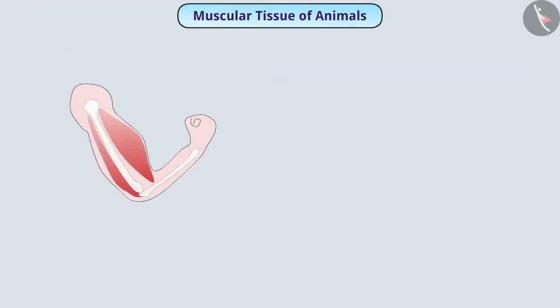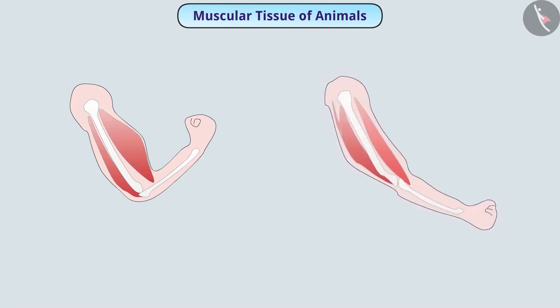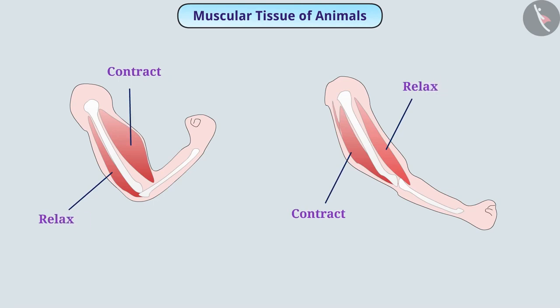For this, first you fold your hand from an elbow. Now observe the top and bottom muscles. After this, straighten the arm and once again observe the muscles. We can see that in both cases, the muscles are contracted and relaxed, due to which there are hand movements.